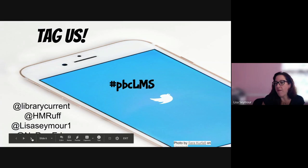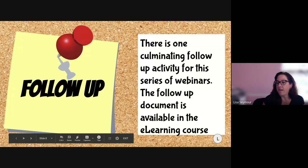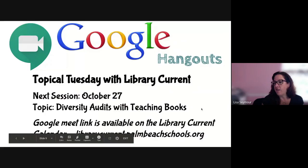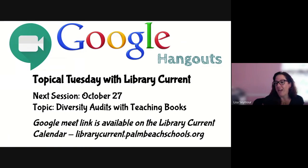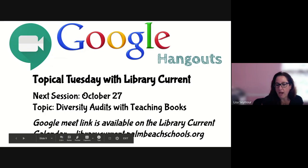If you don't already follow us on Twitter, please do and tag us in your posts — we love to see what's going on in your libraries. If you want points for Topical Tuesday, sign up in e-learning. The course is live; you can earn two points per session, with one culminating activity for the full webinar series — up to 14 points total. In two weeks, join us again at 2:30 for diversity audits with TeachingBooks, another great portal resource, where they'll discuss using their tool to conduct diversity audits of your collections.